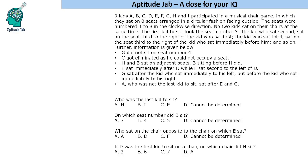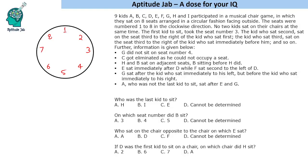Let us draw the seats. There are 8 seats numbered 1 to 8 in a clockwise manner. Now it is saying that the first kid to sit took seat number 3. This is the first kid who sat on this seat.